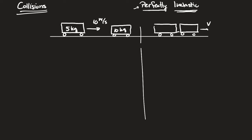In these problems, momentum is a conserved quantity, which means the momentum of the first object plus the momentum of the second object before the collision has to equal the momentum of the first plus the second after the collision. When we talk about collisions, we focus on the instant before they touch and the instant after. Collisions are instantaneous — we're talking about the moment before and the moment after they touch.